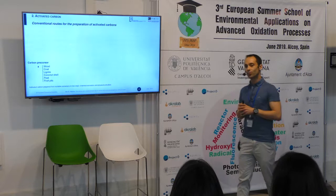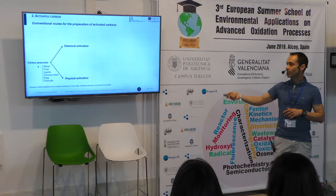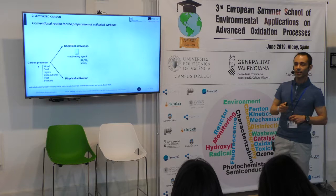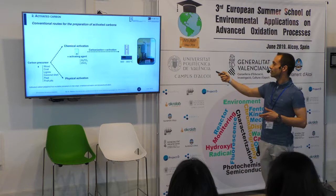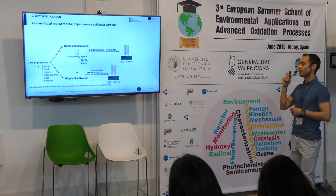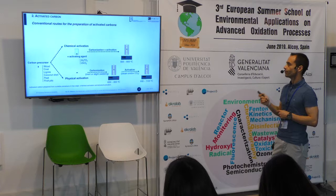Starting with activated carbon, there are two main routes for the preparation of activated carbon: chemical activation or physical activation. In chemical activation, an activating agent is added to the carbon precursor, and then carbonization and activation occurs simultaneously, usually in an oven. In physical activation, the carbonization occurs first, followed by activation.